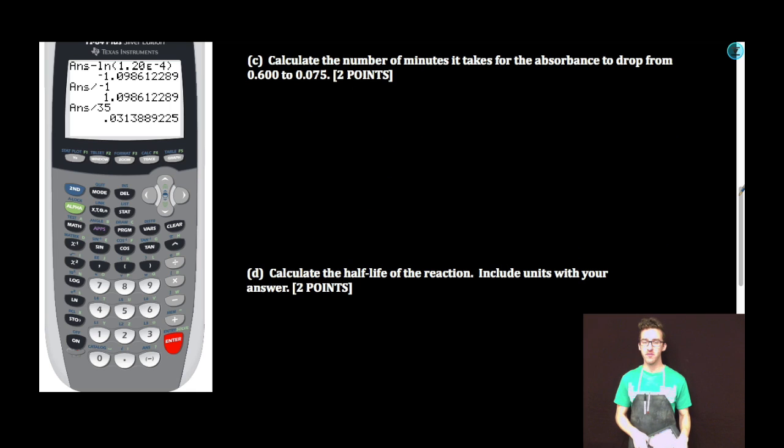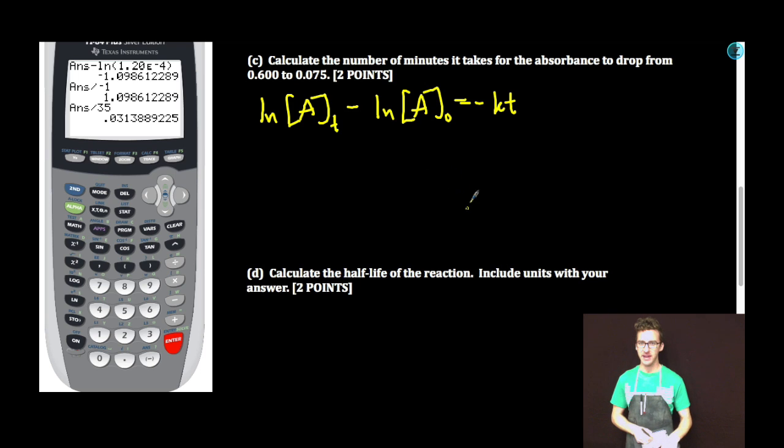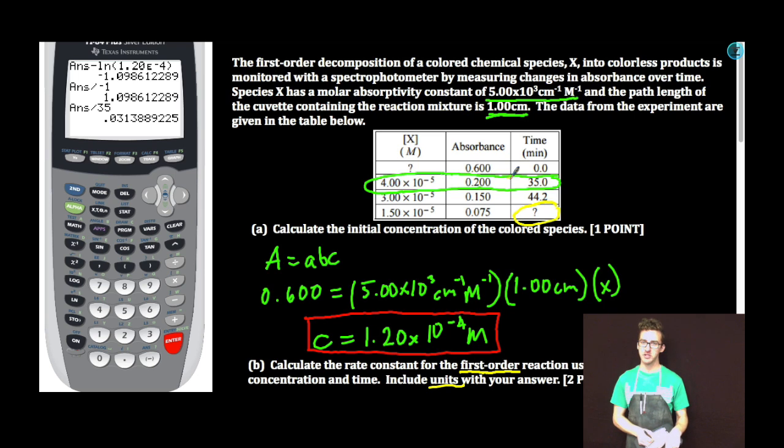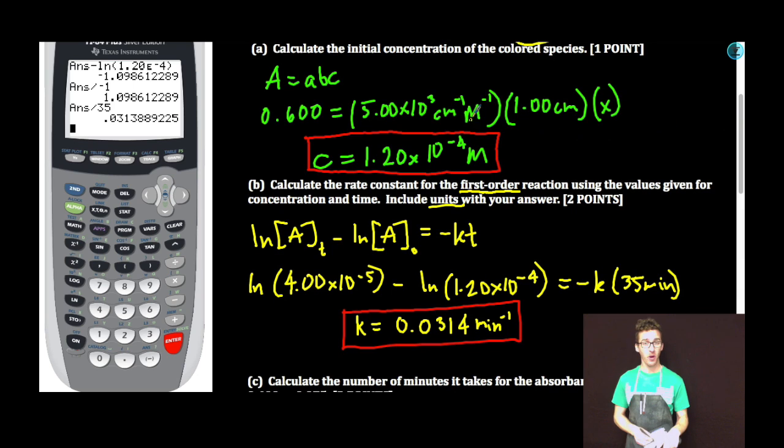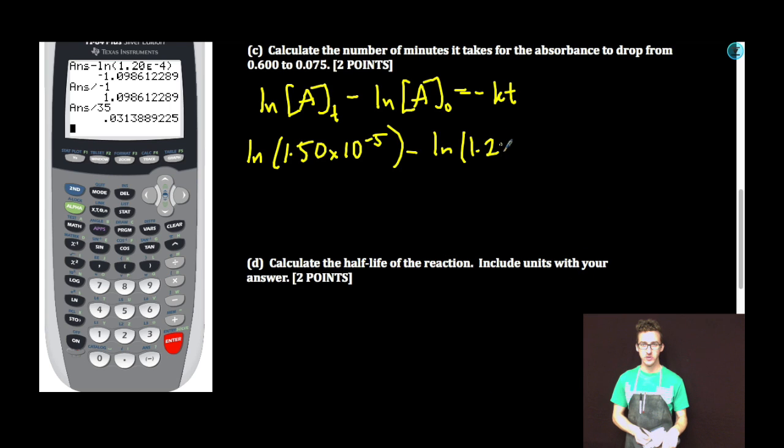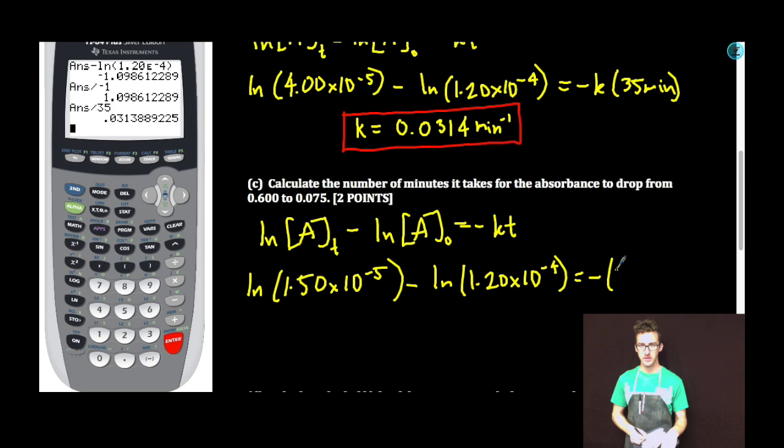Part C: Calculate the number of minutes it takes for the absorbance to drop from 0.600 to 0.075. My good friend, integrated rate law for first order reaction coming back to help us again. We're trying to determine the time after the absorbance has gone from 0.6 to 0.075 or from our initial concentration to 1.50 times 10 to the minus 5 molar. Natural log, 1.50 times 10 to the minus 5 minus natural log our initial concentration, once again, coming from part A. So even if you didn't get this value, make sure you continue to use this value in the subsequent parts. 1.20 times 10 to the minus 4 equals negative k. We just determined the value for our rate constant. 0.0314 per minute times t.